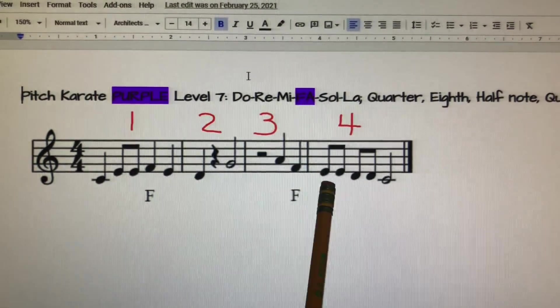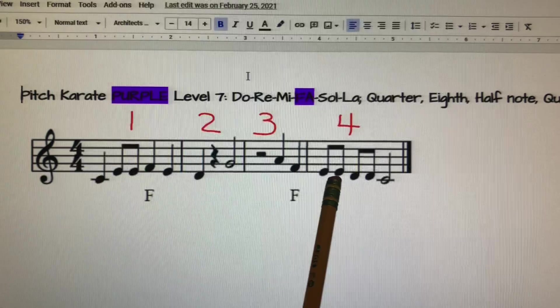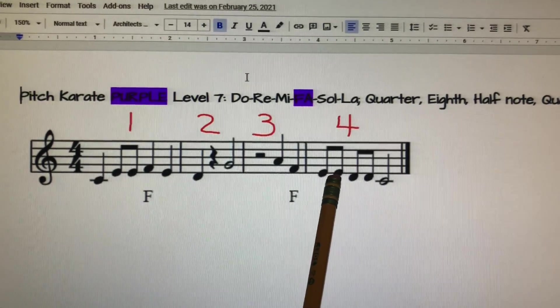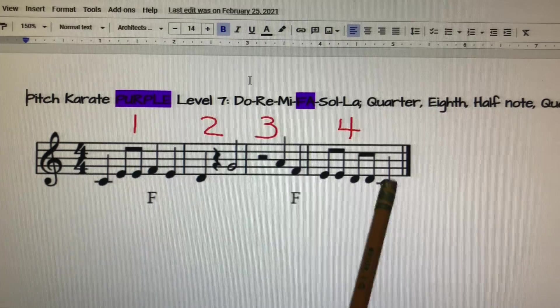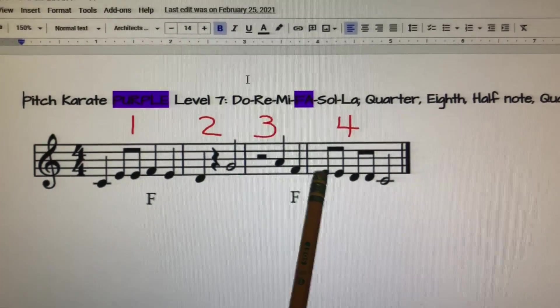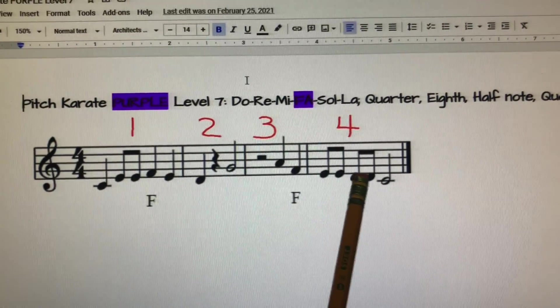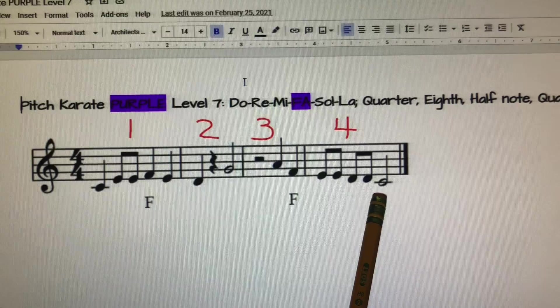Okay, and then measure four. It's on the bottom line there. We've got Mi, Mi, Re, Re, and we end with a half note Do. So here it is. I'll go first: Mi, Mi, Re, Re, Do. Your turn.